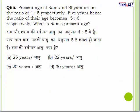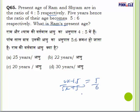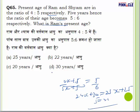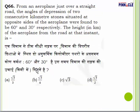Question number 65: Present ages of Ram and Shyam are in the ratio 4:5. Five years hence the ratio becomes 5:6. Let present ages be 4x and 5x. After 5 years: (4x+5)/(5x+5) equals 5/6. Solving gives x equals 5. Ram's present age is 4 times 5 equals 20 years.